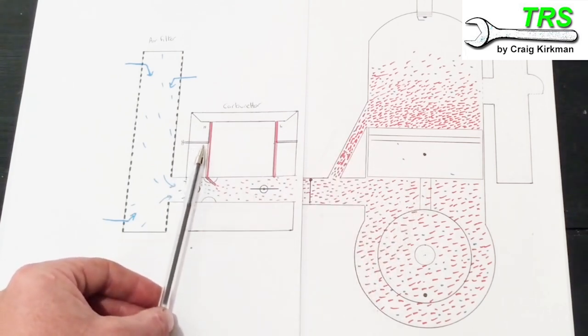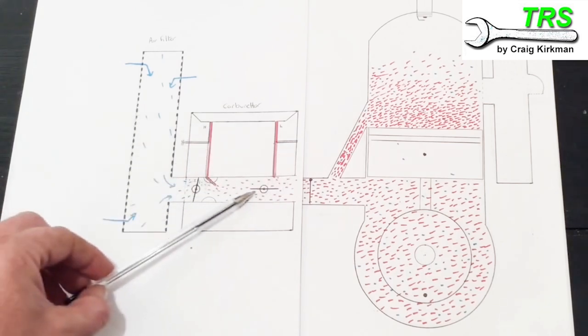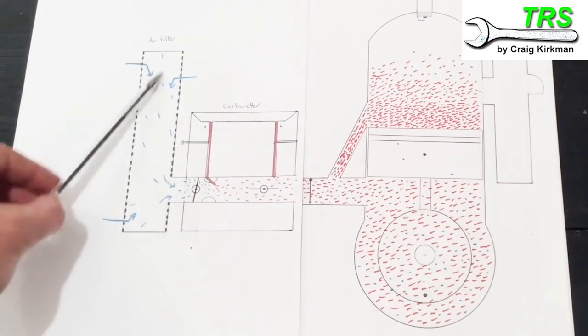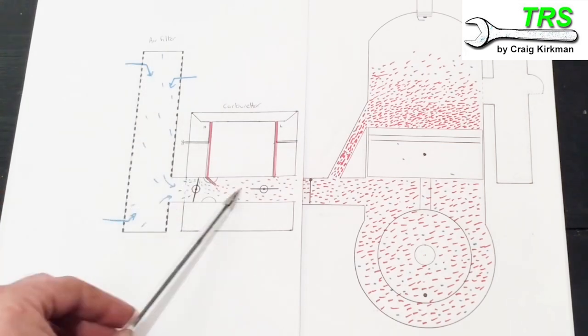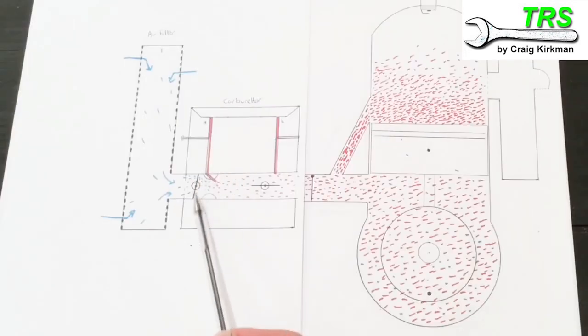But if it's stuck shut like this, if we try and start it too many times with it shut or if it closes during operation, then the same thing will happen as a blocked air filter. Less air will be able to come through and we'd have the same problem again with the flooding. So we just make sure everything's okay there with the choke.